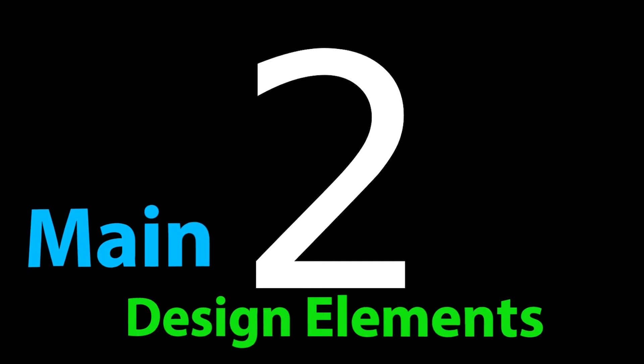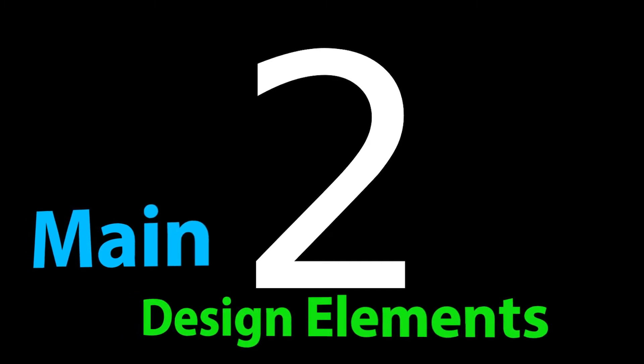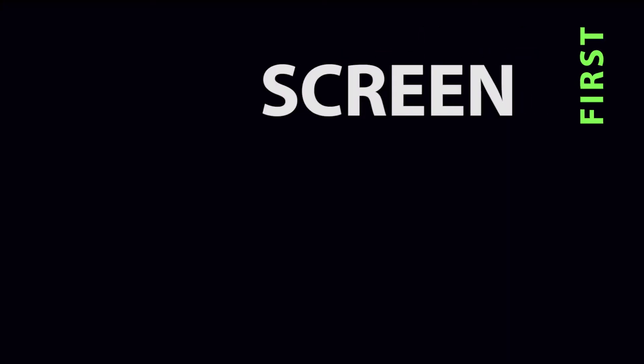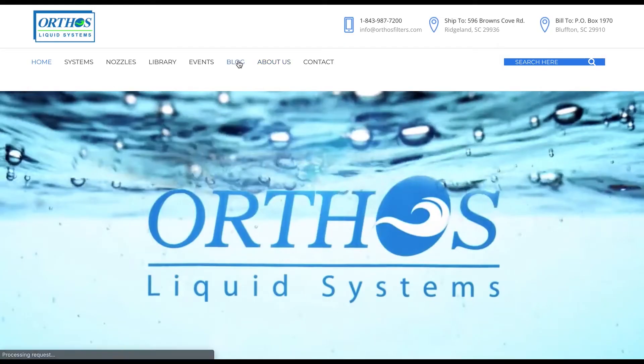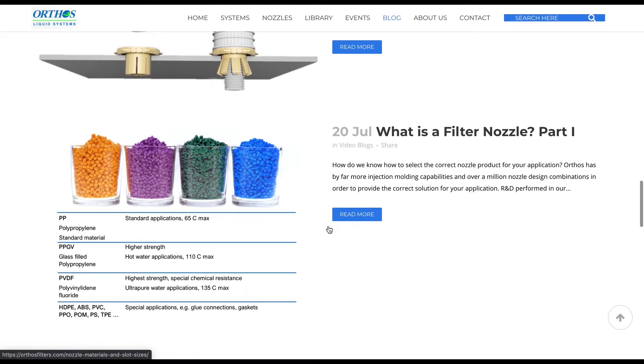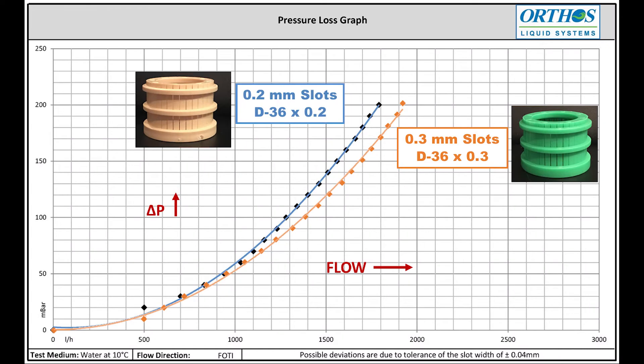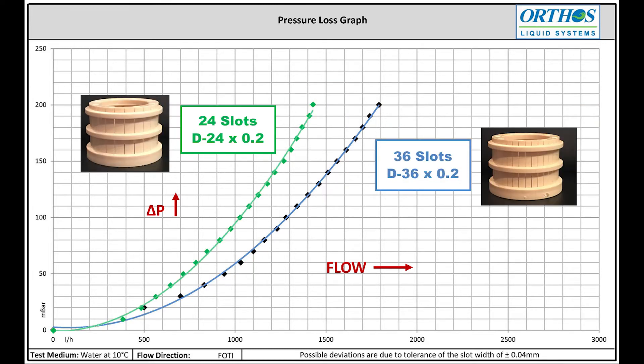There are two main design elements that determine pressure drop through a nozzle at a given flow rate. First is screen construction. Be sure to watch part one of this series in which I discuss screen slot width. A choice may be required between more than one appropriate width. For the same number of slots, smaller width slots impart more pressure drop than larger. Utilizing the same width slot, fewer slots in a screen will create more pressure drop at the same flow rate.